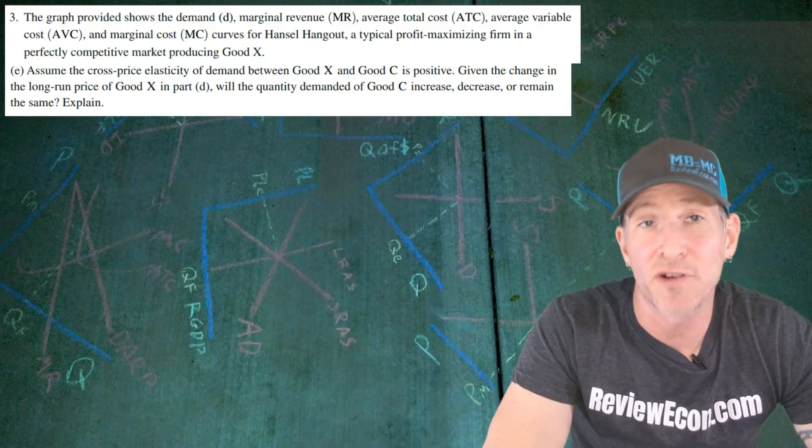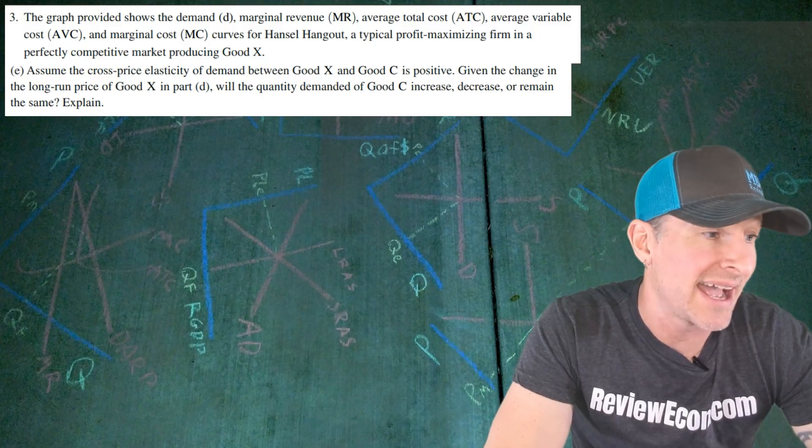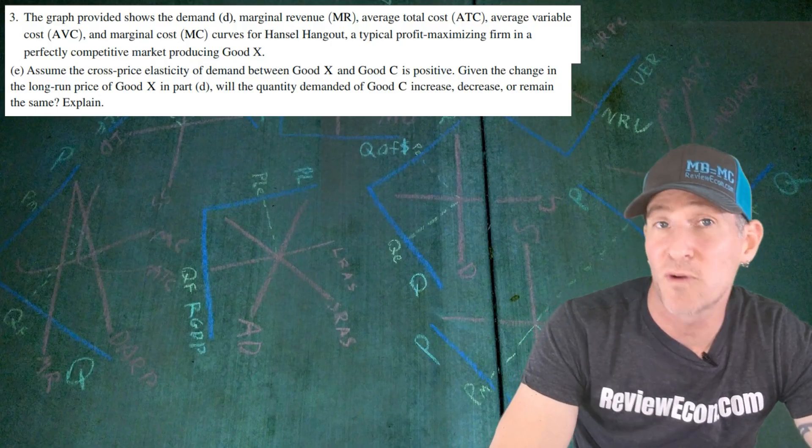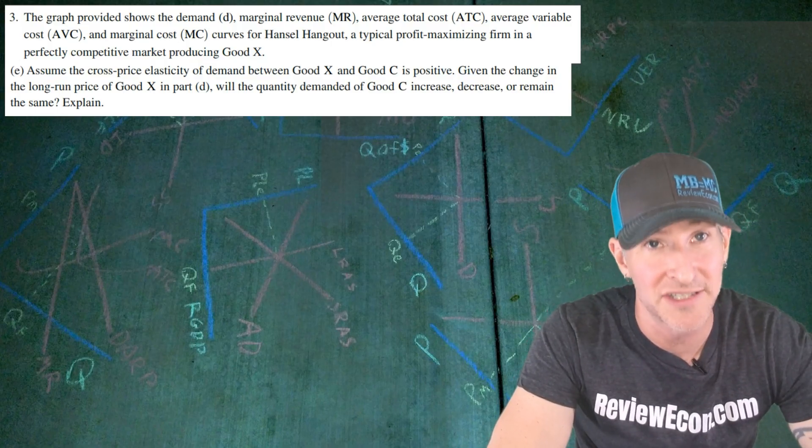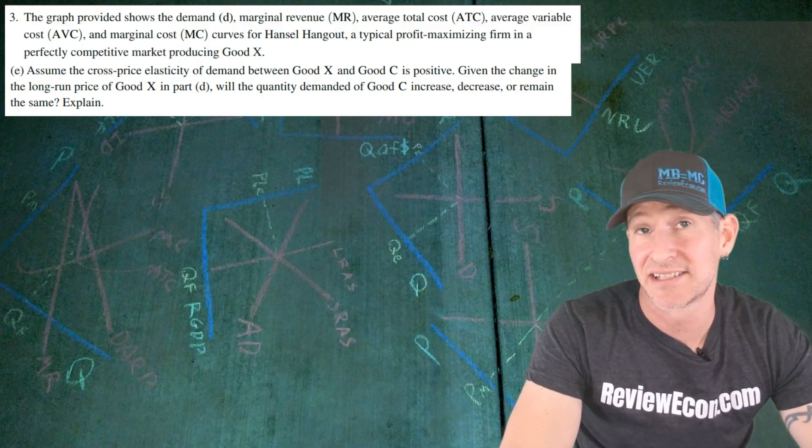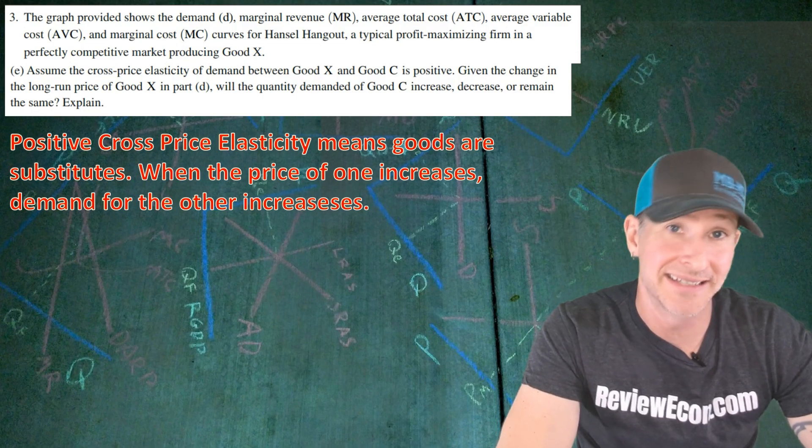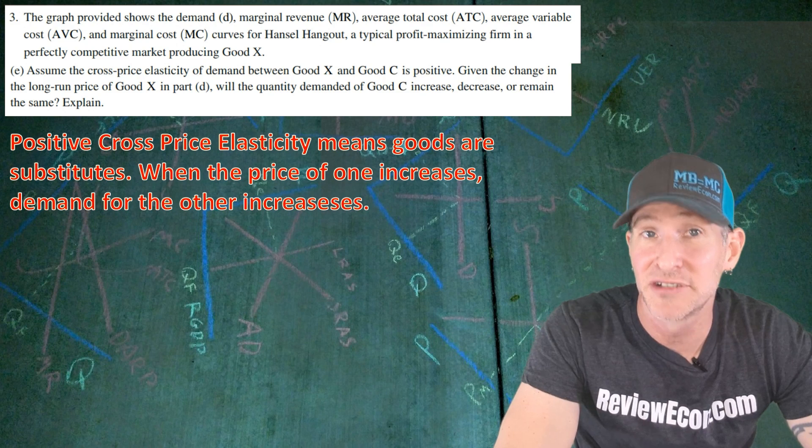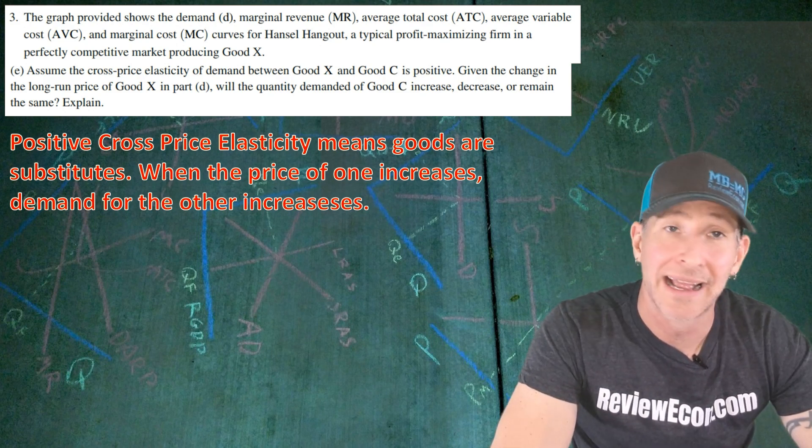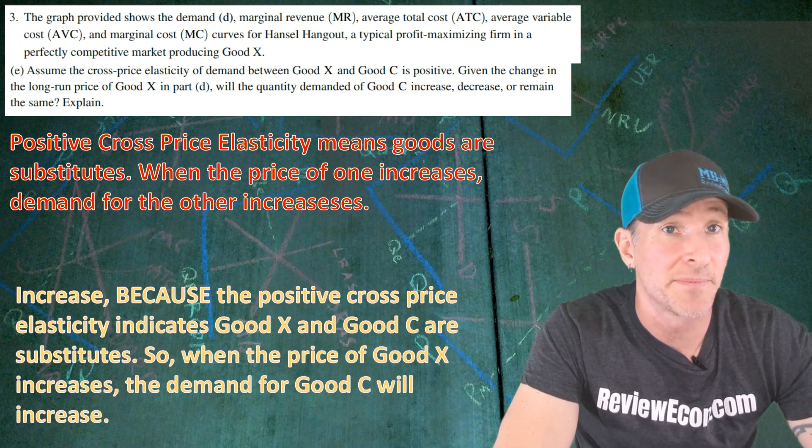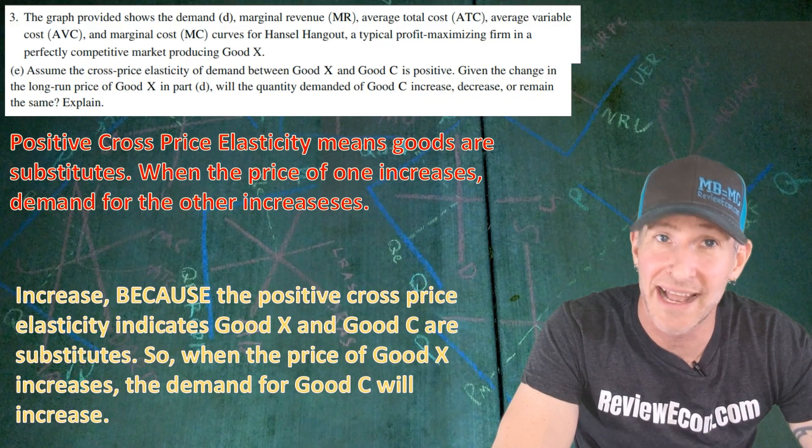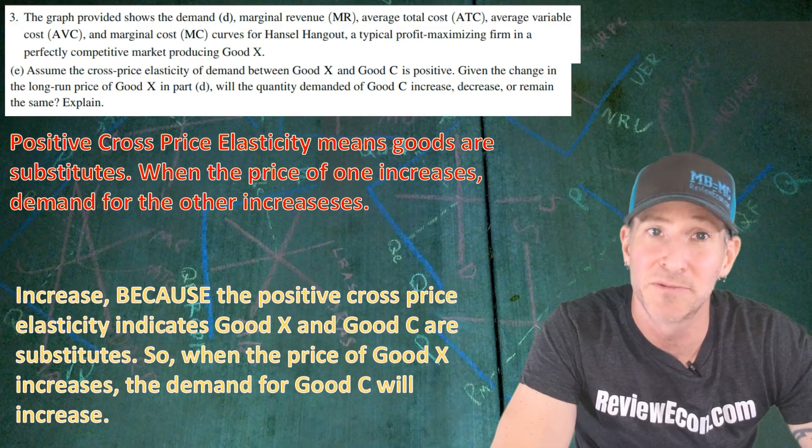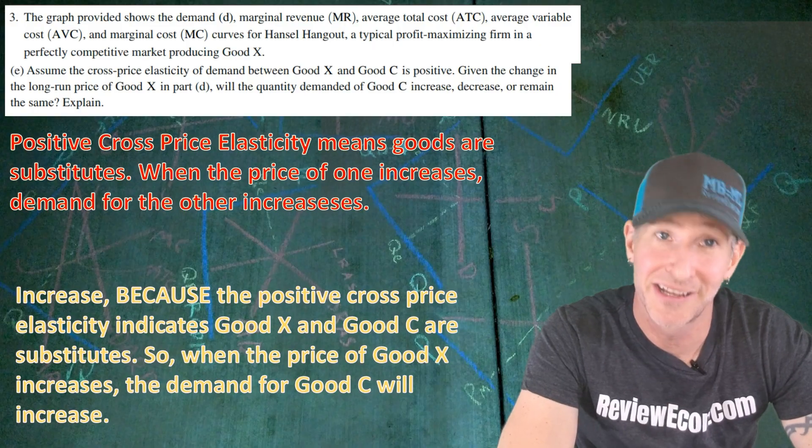For part E, we are told to assume that the cross-price elasticity between good X and good C is positive. And given the long-run change in the price we just saw for good X, we're asked if the quantity demanded for good C will increase, decrease, or remain the same. And we have to explain. Now, since this is a positive cross-price elasticity, that means these goods are substitutes. And when goods are substitutes, an increase in the price of one good will lead to an increase in the demand for the other good. And so that means our answer is increase. Because the positive cross-price elasticity indicates good X and good C are substitutes, so when the price of good X increases, the demand for good C will also increase. If you have an answer something like that, you get your last point.